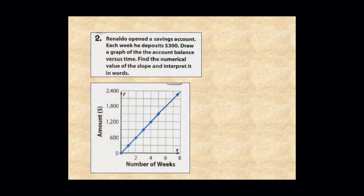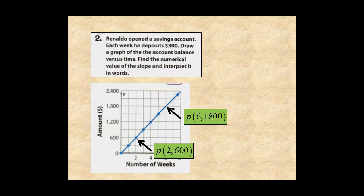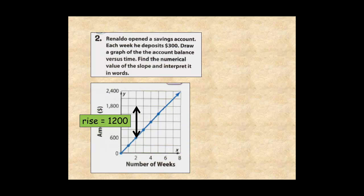In example 2, between the points 2,600 and 6,1800, the rise is 1,200 and the run is 4. So the slope is 1,200 divided by 4, which is 300.